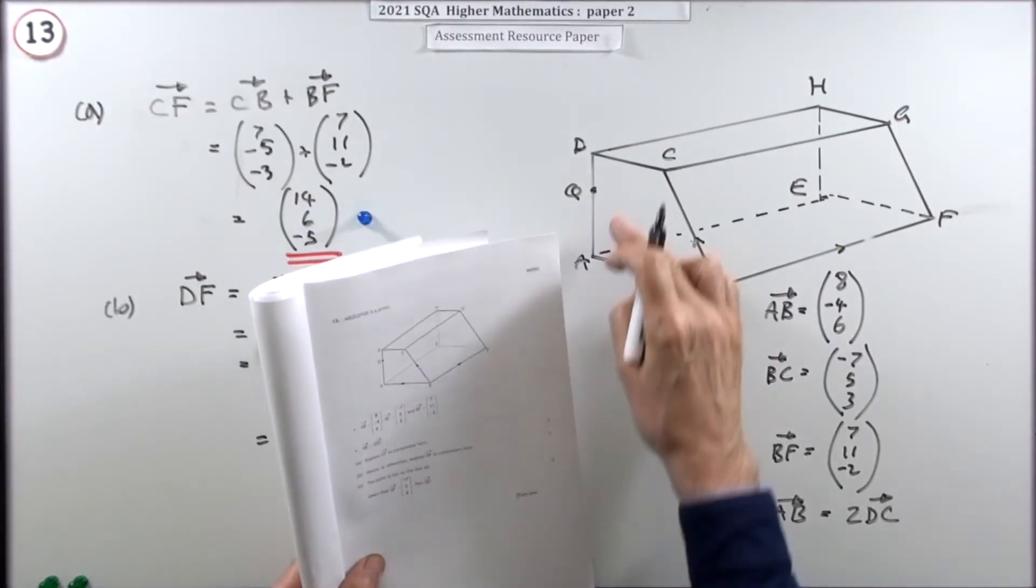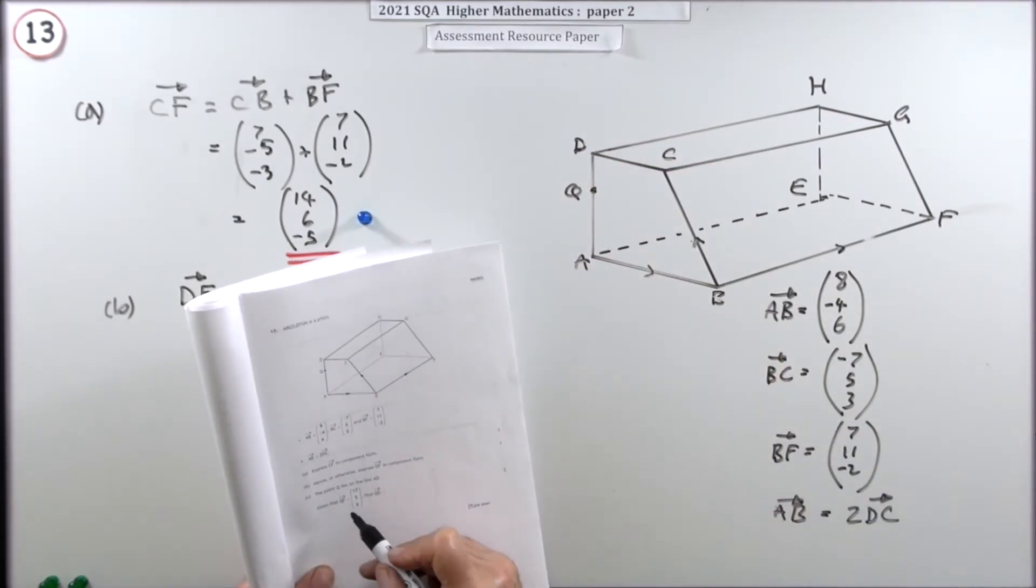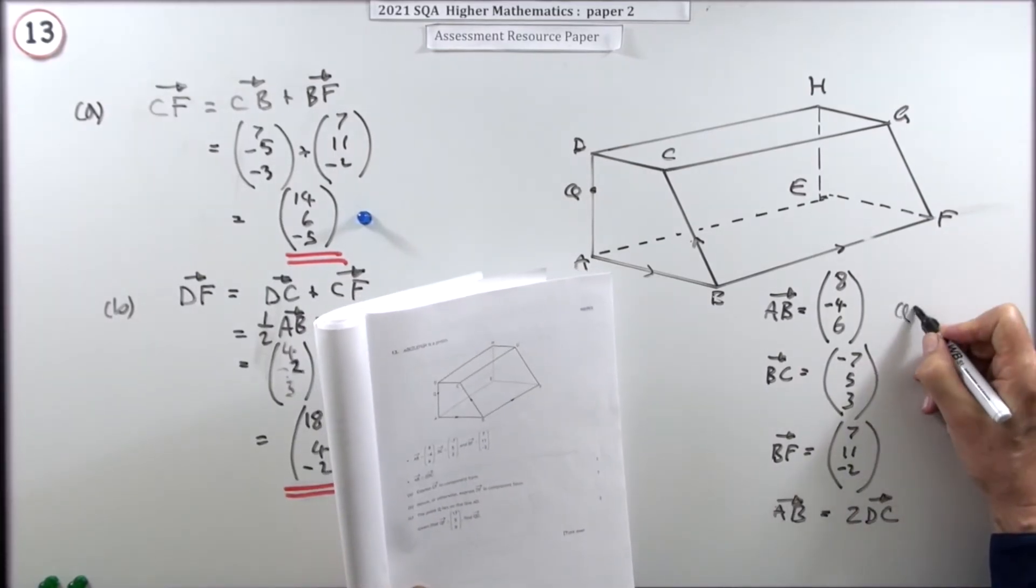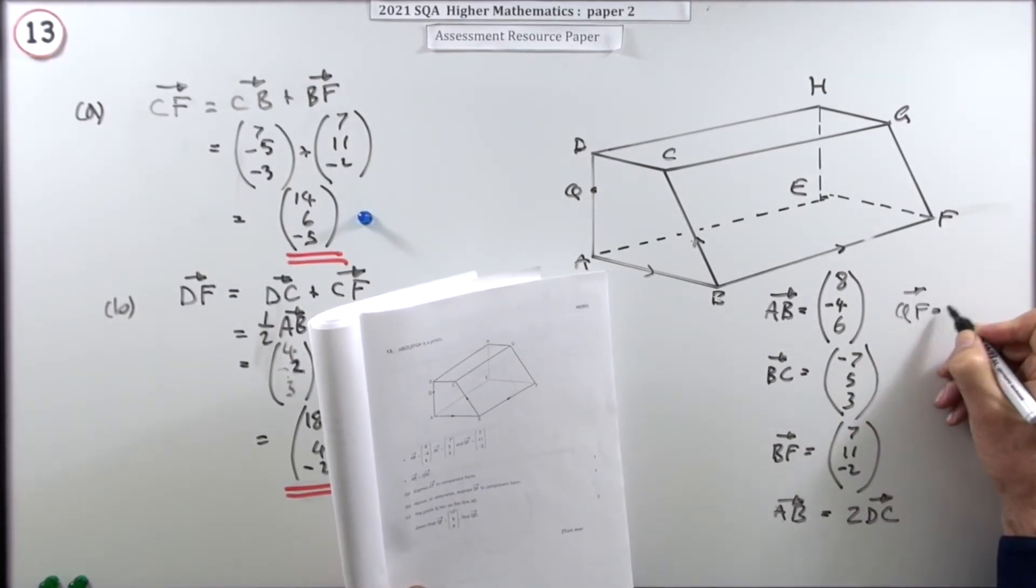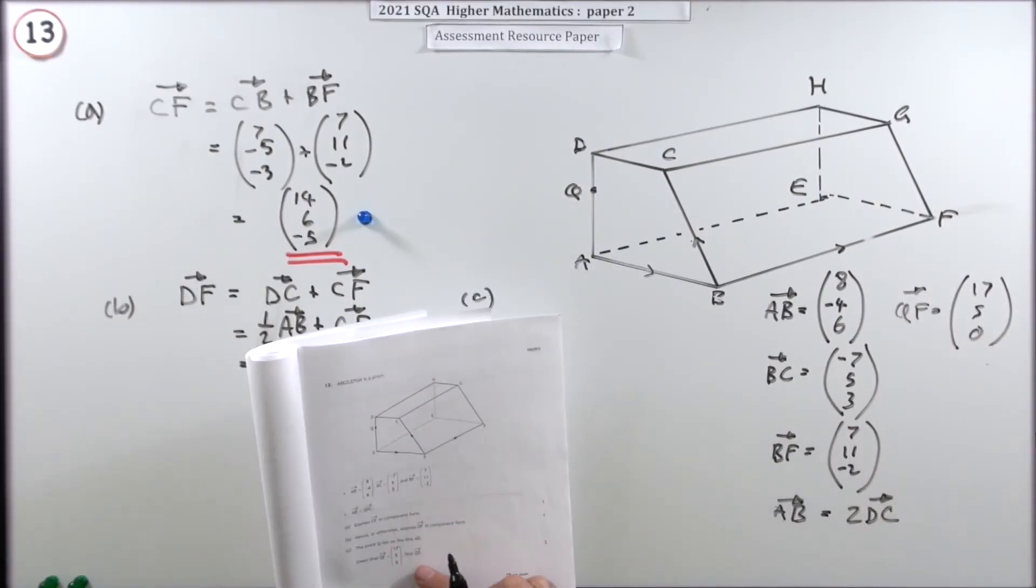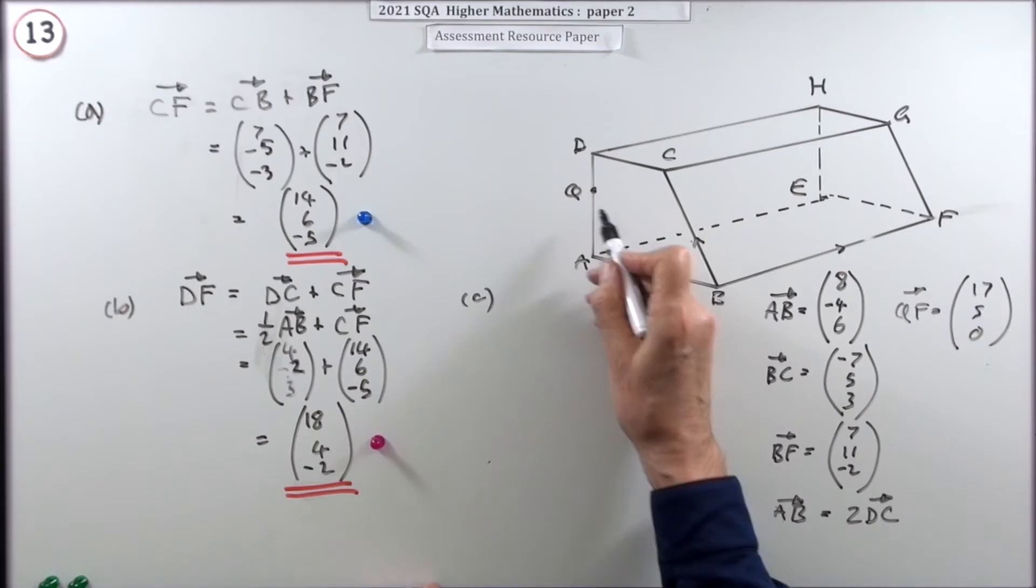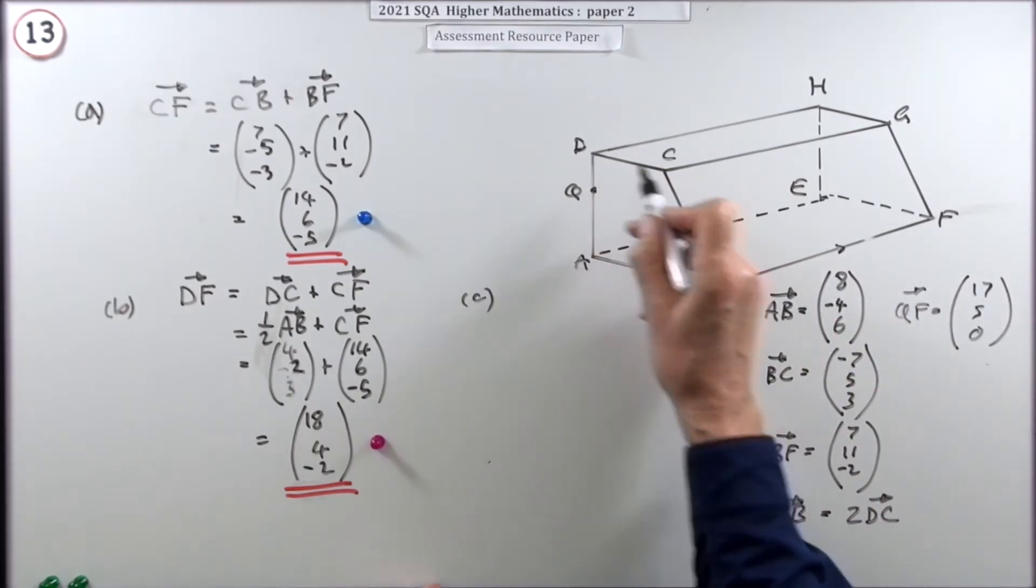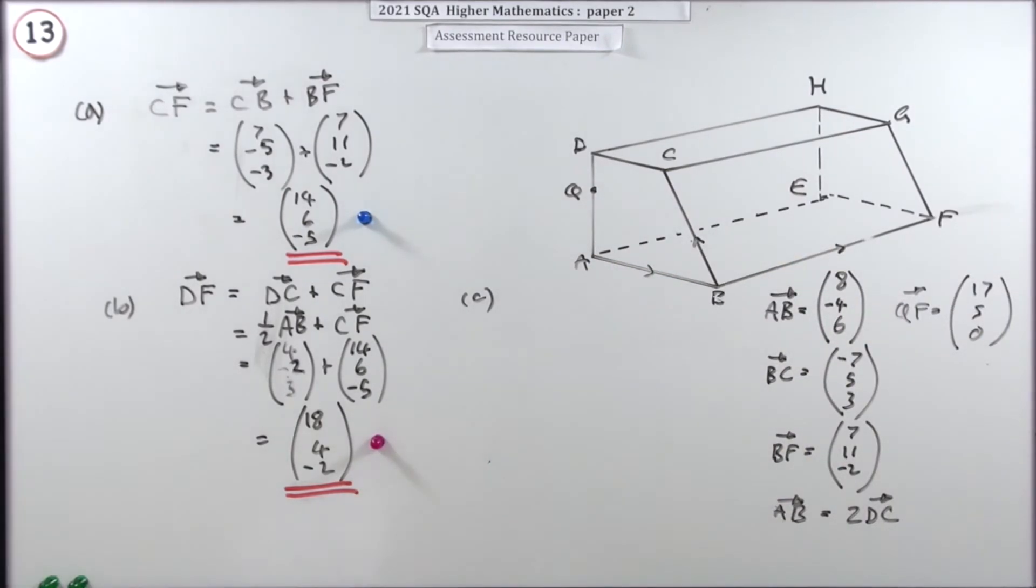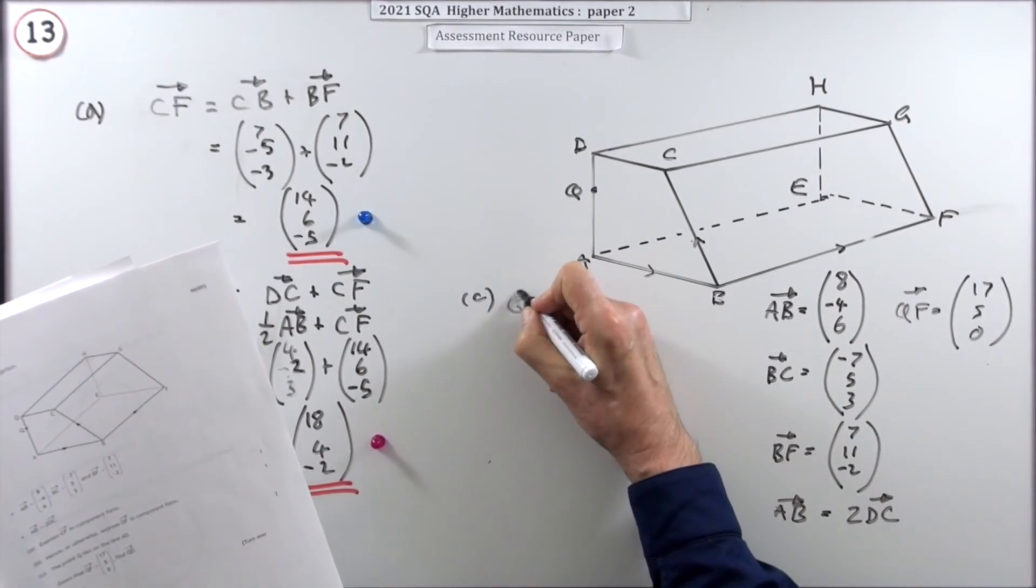Now in part C, it's talking about this point Q. Q lies in the line AD, but it's not going to be anything like a section of a line because it tells you this. It says, given that QF is 17, 5, 0. So now I've got QF to add to this. So QF is 17, 5, 0. Find QD. Well, if you know QF and you know DF. I've forgotten which one I'm looking for. I'm looking for QD. So I'm just going to put that down. QD. So I remember QD.